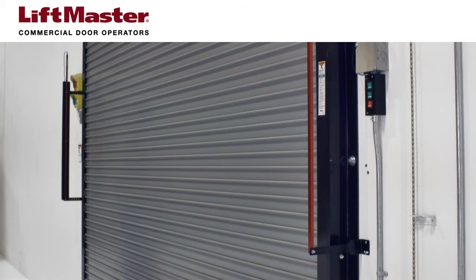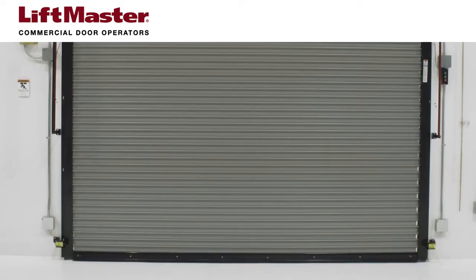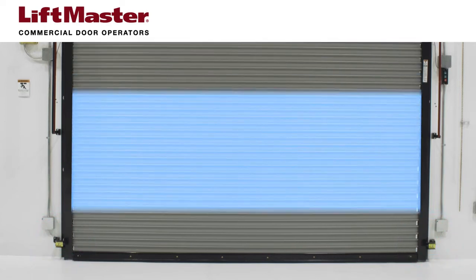LiftMaster's LC36A light curtains generate a cross-beam protection pattern that provides 36 inches of continuous coverage to keep customers, employees, and equipment safe. The LC36A must be used in tandem with a primary entrapment protection device and be installed along the vertical plane of the door.